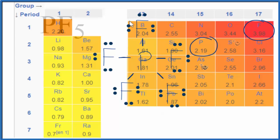That's a very large difference. If we have a difference greater than 0.5 but less than 2.0, we say we have a polar covalent bond. So this is a very polar covalent bond.